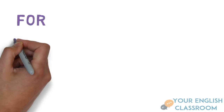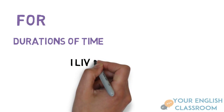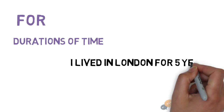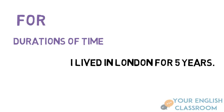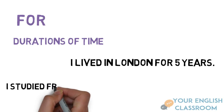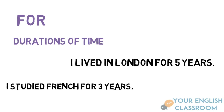Next we have the preposition 'for,' which is used for durations of time — a period of time. For example: 'I lived in London for five years.' Five years is a period of time. Also: 'I studied French for three years' — again, a period of time.